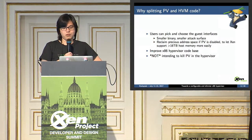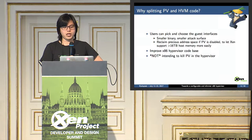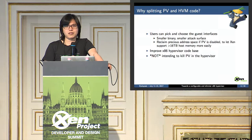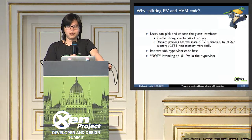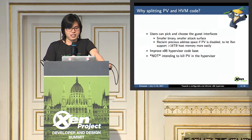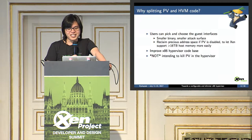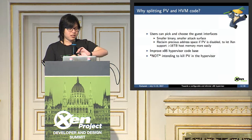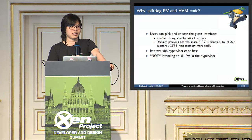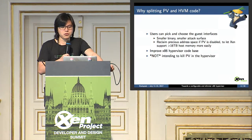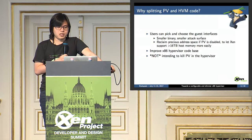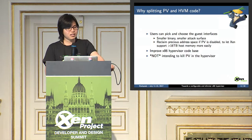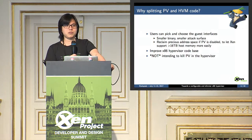Along the way, I also want to improve the x86 hypervisor code base, because Xen was started about 14–15 years ago and there's a lot to be desired. It's also important to point out that this project does not aim to kill PV in the hypervisor, because PV mode is still useful in certain cases like unikernel or nested virtualization without virtualized VMX or SVM support.